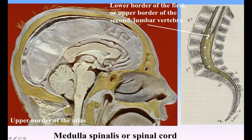Above, it is continuous with the brain. Below, it ends in a conical extremity, the conus medullaris, from the apex of which a delicate filament, the filum terminale, descends as far as the first segment of the coccyx.